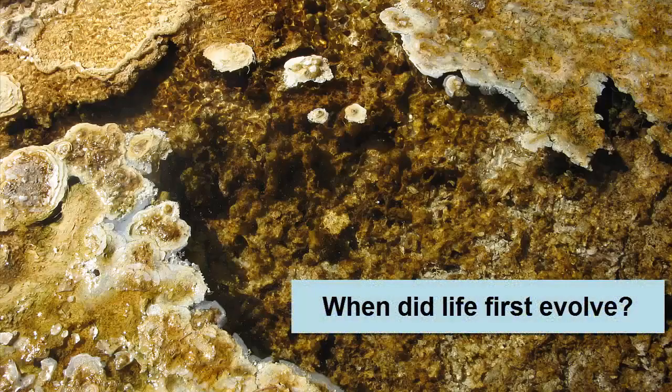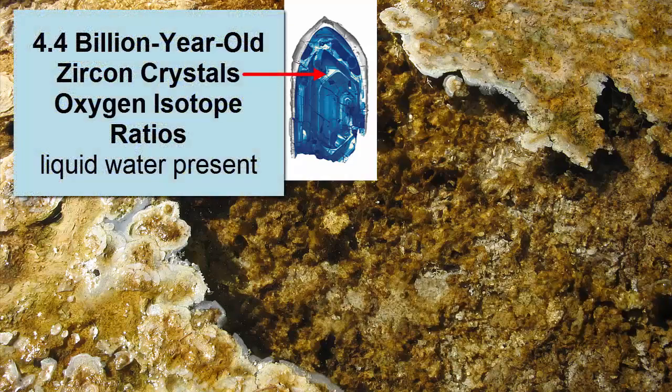When did life first evolve on planet Earth? Oxygen isotope ratios in 4.4 billion year old zircon minerals indicate temperatures on the surface would have been cool enough for liquid water to be stable. Since life requires water, 4.4 billion years represents a possible oldest date for life on Earth.